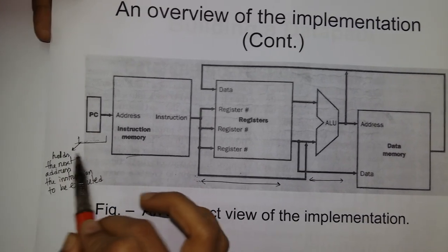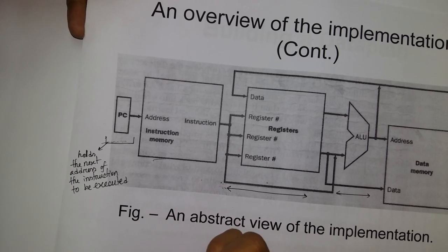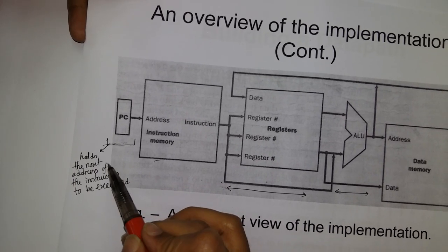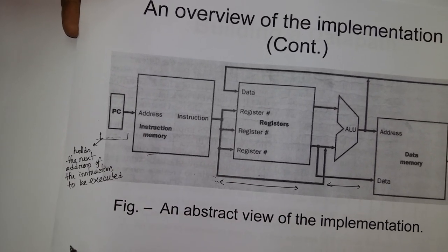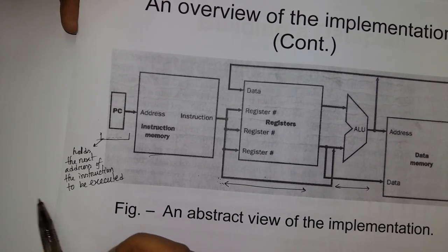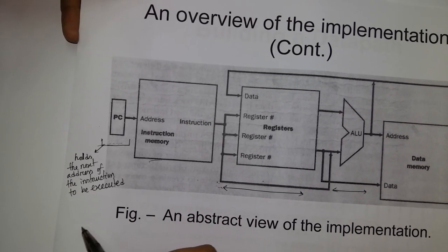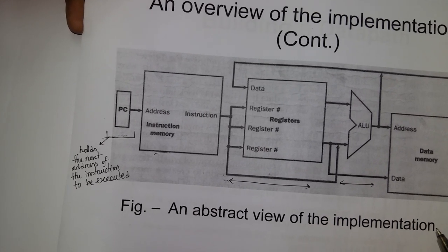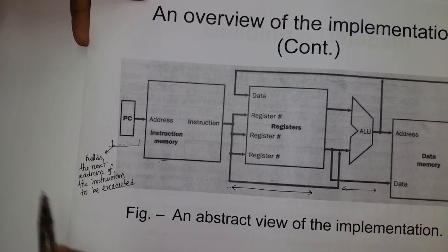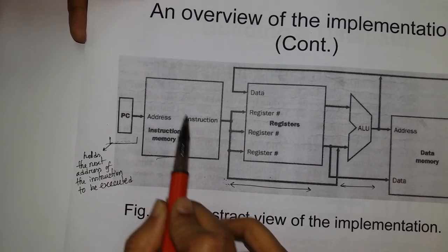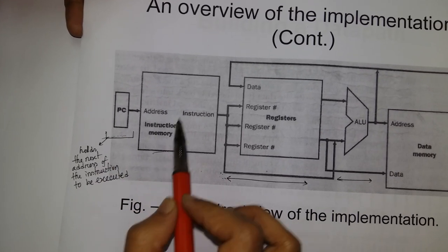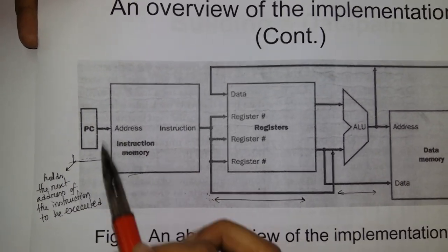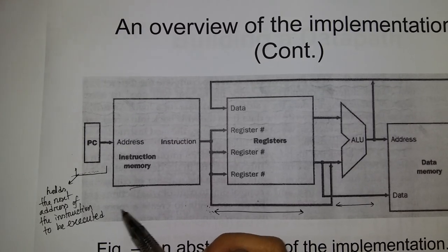The first block is the program counter. The program counter holds the next address of the instruction to be executed. The program counter is connected to the instruction memory, where the instructions that will be executed are stored.